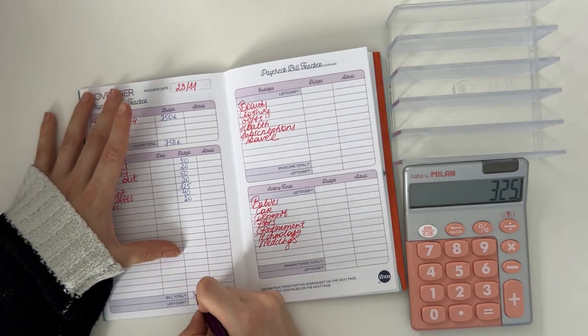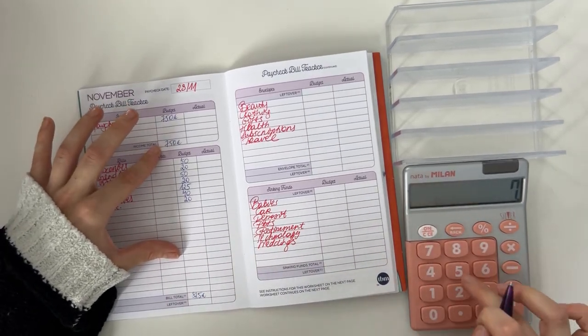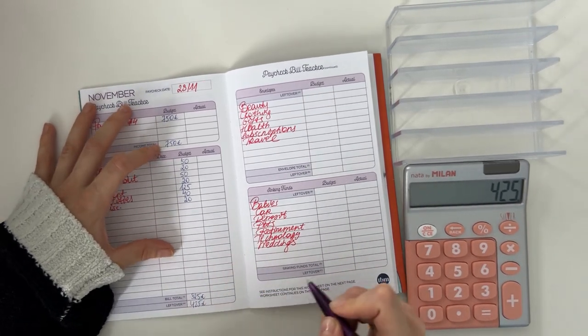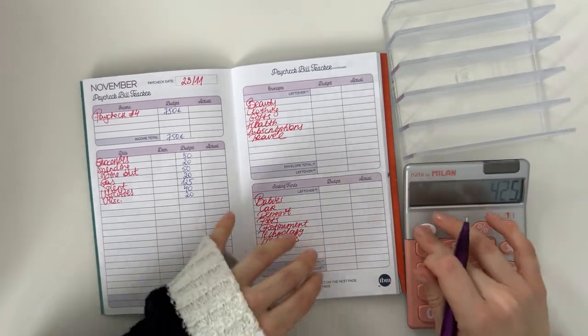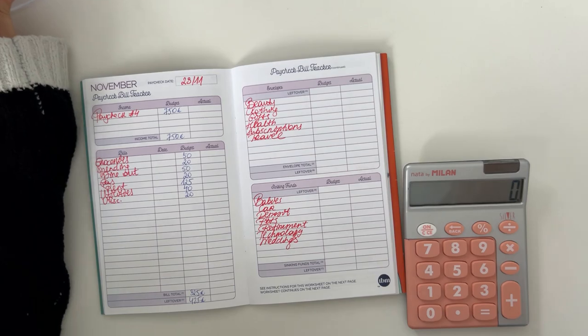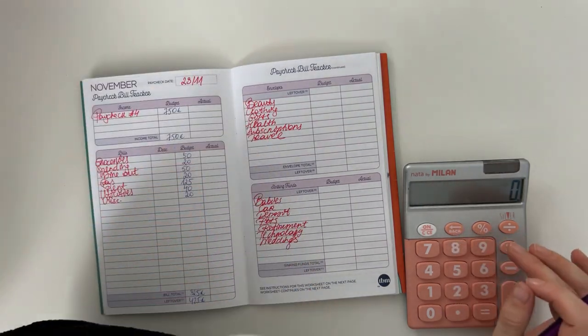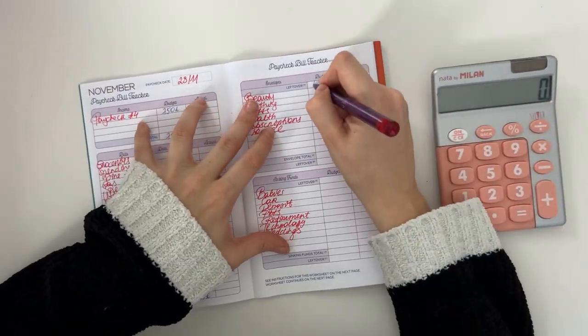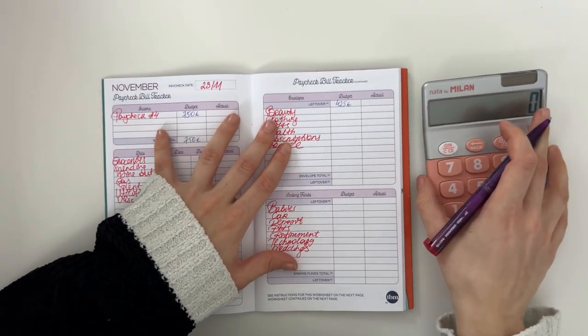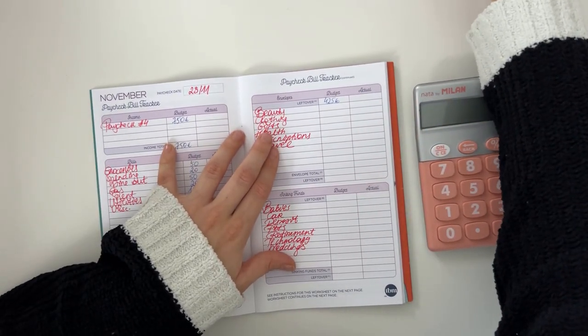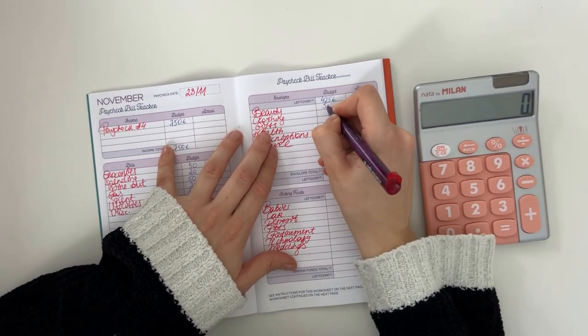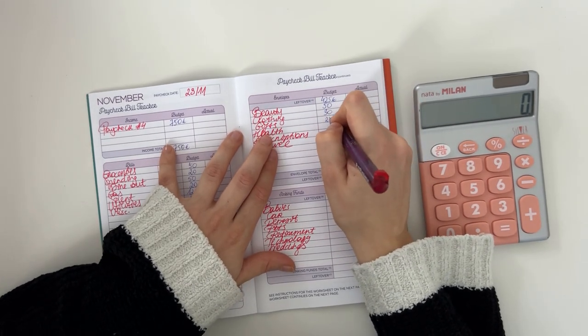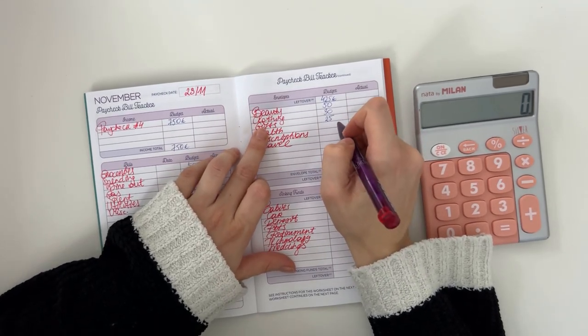Okay, so 425 we're bringing up here to short-term sinking funds. And we are putting, let me check my computer, so we are putting 15 in beauty, we're putting 30 in clothing, 25 into gifts. And that's the last I'm going to stuff gifts for this year because I wanted to get I think to 400 or 500 euros and this is the last amount I need. Health is going to get 50, subscriptions is going to get 20, and travel is going to get 60.